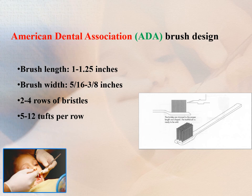The American Dental Association has described the range of dimensions of acceptable brushes. The brush length should be 1 to 1.25 inches, the width should be 5/16 to 3/8 inches, it should consist of 2 to 4 rows of bristles, and consist of 5 to 12 tufts per row.